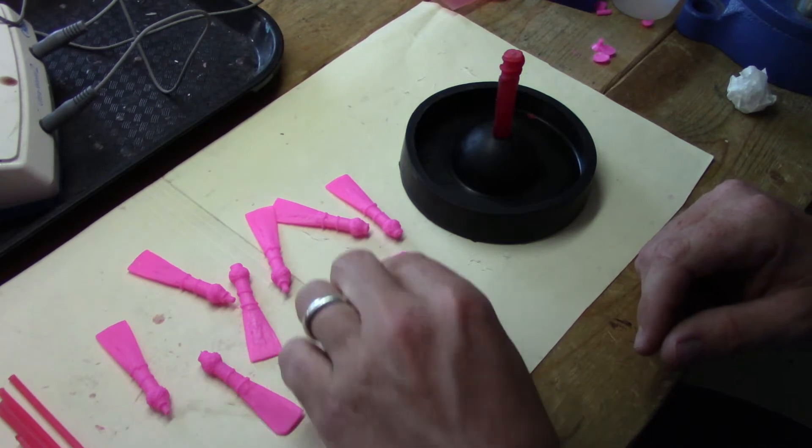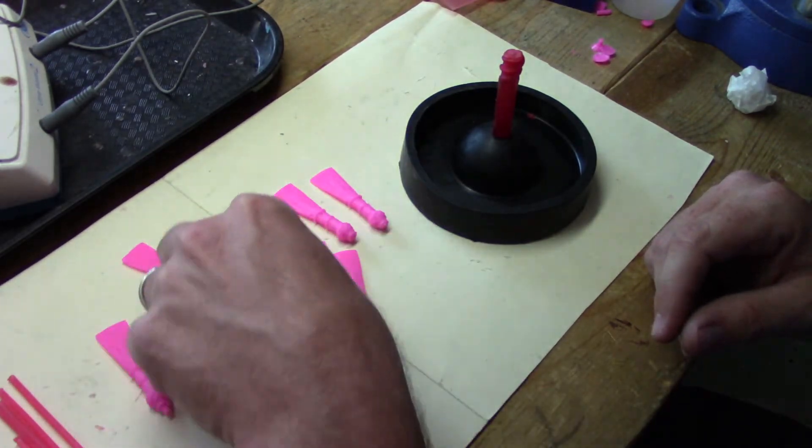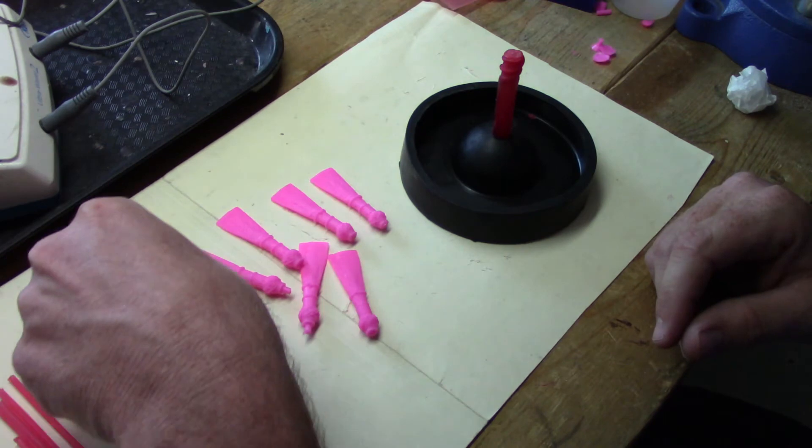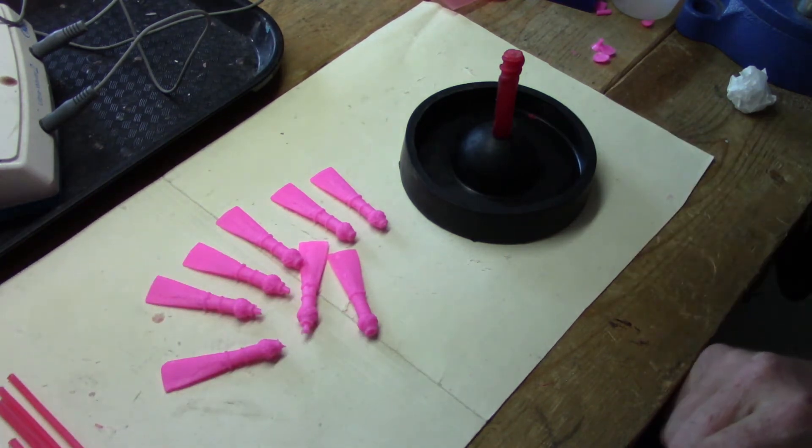The first step is to add a sprue wax to each of your pieces you're going to have branch off prior to trying to connect it to the tree.